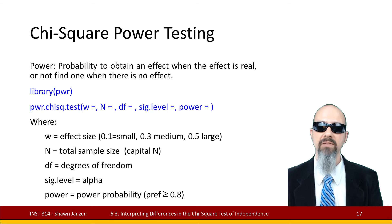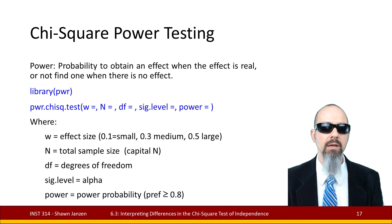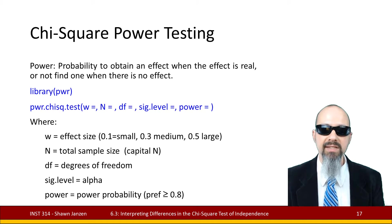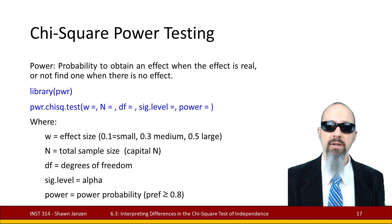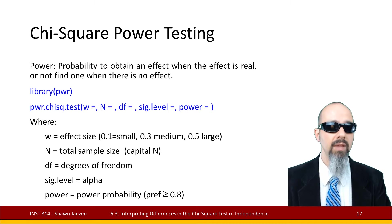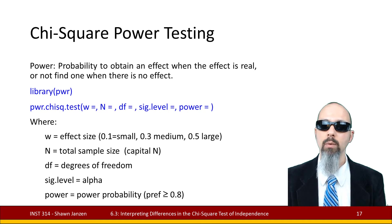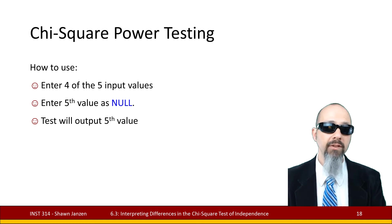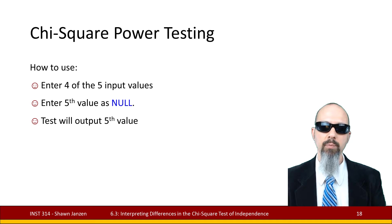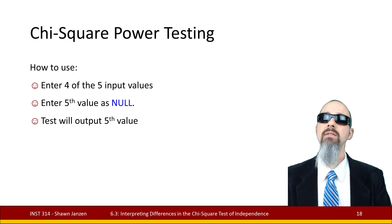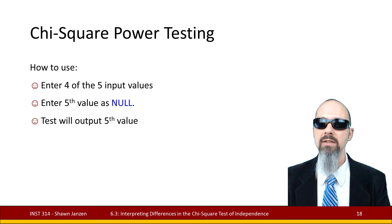Inside pwr.chisq.test, we specify: W (effect size), N (total sample size, capital N), df (degrees of freedom), sig.level (our alpha level, not the p-value), and power (the probability we want — at least 0.8). When doing a power test, enter only four of the five values and set the fifth to NULL (all caps). Running the test gives back the four input values plus the missing fifth value, helping us figure out what we need for the analysis.